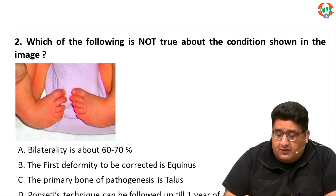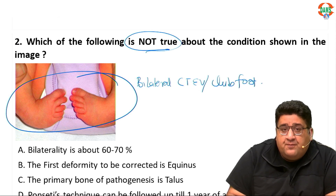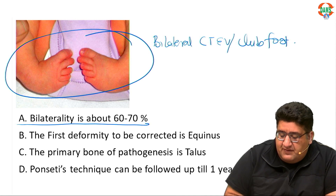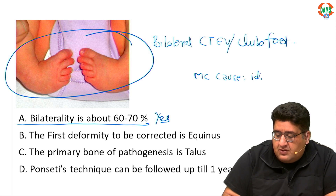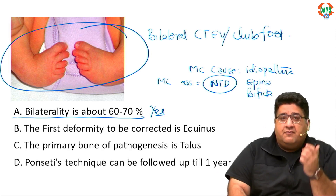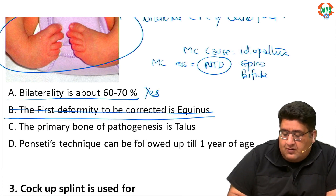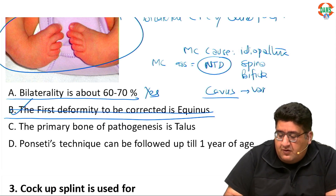Question number two: which of the following is not true? We are dealing with bilateral CTEV, also called clubfoot. Bilaterality is around 60 to 70% — that's a fact. The most common cause for clubfoot is always idiopathic. The most common association is always neural tube defect, primarily spina bifida. The first deformity to be corrected is equinus — this is absolutely wrong. The correct order is cavus, followed by varus, followed by equinus.